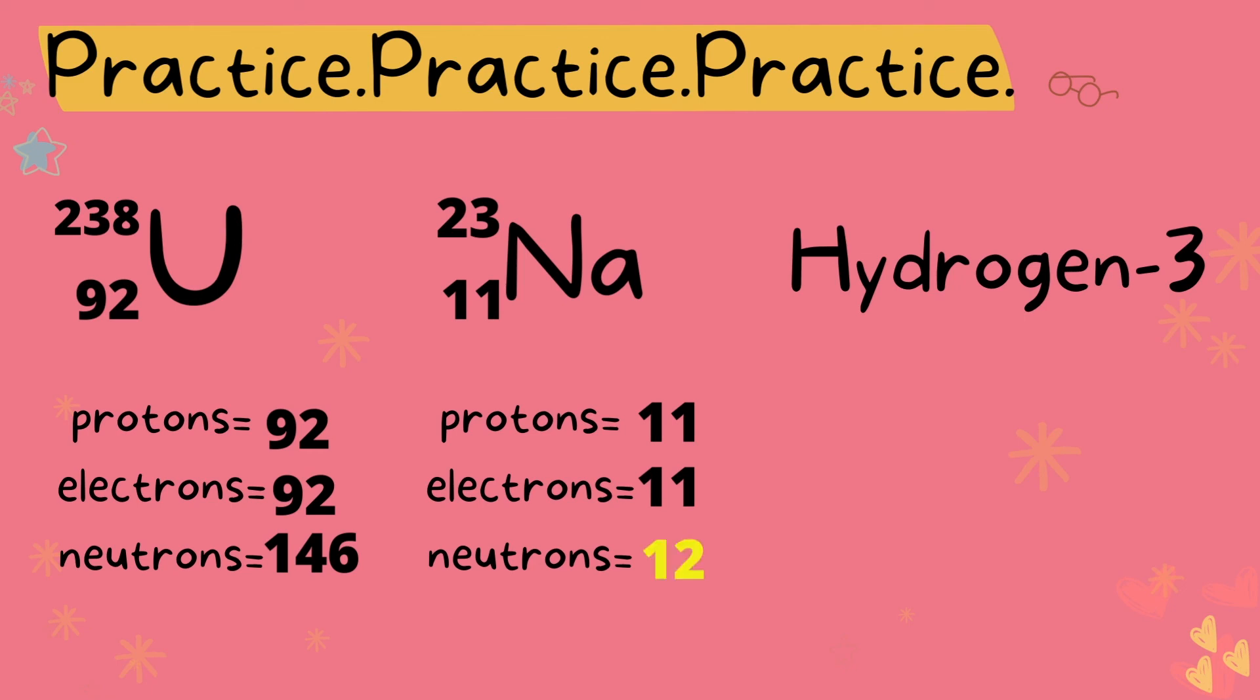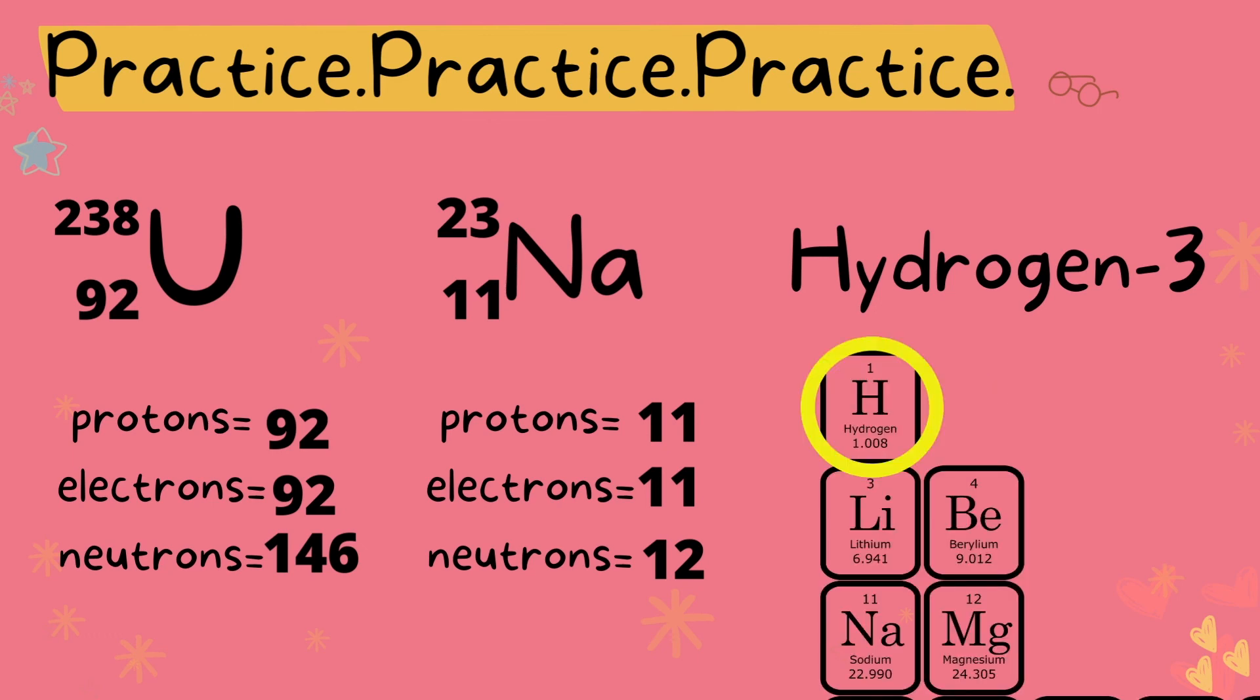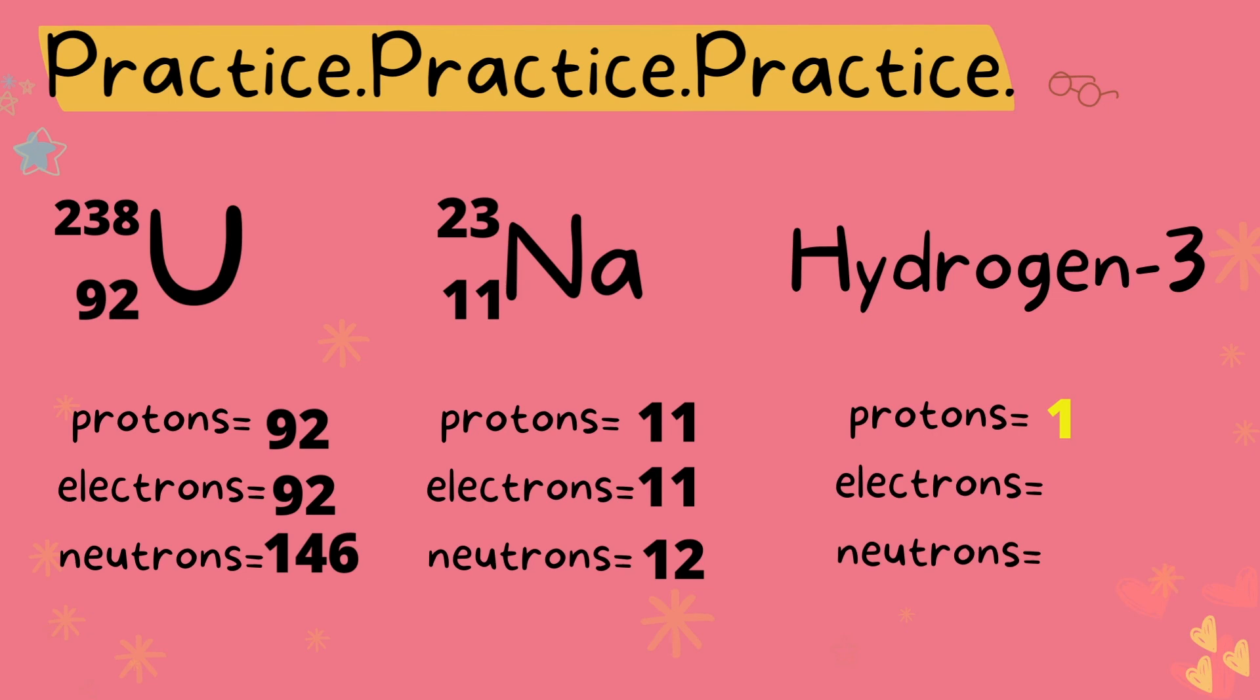Lastly we know this is an isotope because the way it is written. Specifically it has a dash with a number at the end that does not match the mass number of hydrogen on the periodic table. Also we see the atomic number on the periodic table is one. So with this information let's fill out the number of protons, electrons, and neutrons. Protons we have one, one electron, two neutrons.